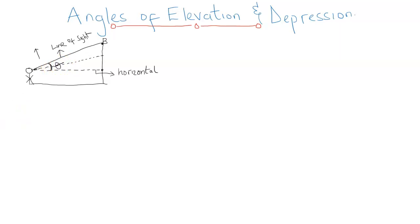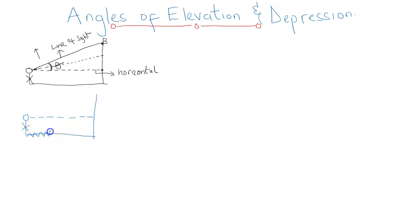Let's have a similar diagram for depression. We are still going to use the short man. This is the initial line of sight — he's only going to be able to see this. So let's assume that there is a building here. The man and the building are on the same horizontal ground. Initially, this man is only going to be able to see this part of the building. Now, if he intends seeing the bottom of the building, he is going to have to lower his head.